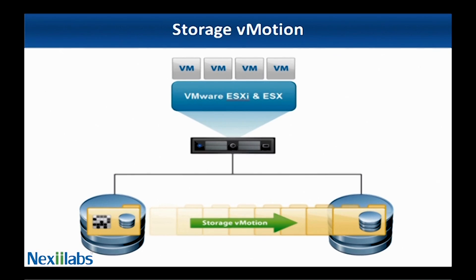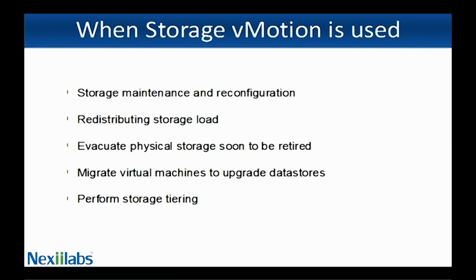During Storage vMotion, you can transform virtual disks from thick provision lazy zeroed or thick provision eager zeroed to a thin provisioned datastore, or vice versa. You can use Storage vMotion to move virtual machines off of a storage device to allow maintenance or reconfiguration of the storage device without virtual machine downtime.